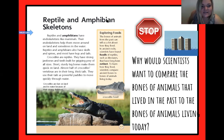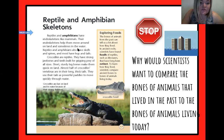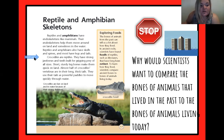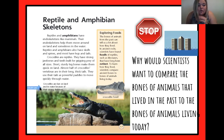Reptiles and amphibians have endoskeletons like mammals. Their endoskeletons help them move around on land and sometimes in the water. An amphibian is something that lives on land and water, so their skeleton is made to help them do that. Reptiles and amphibians also have skulls and spines, and most have legs and tails. Crocodiles are reptiles. They have strong jawbones and teeth built for gripping prey of all sizes. Short, sturdy leg bones make them quick on land. Almost half of crocodiles' vertebrae are in their long, thick tails. They use their tails as powerful paddles to move quickly through water. Crocodiles are fast on land and in water because of their strong skeleton.